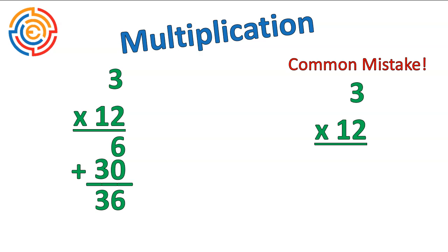But one very common mistake with this is that you do 2 times 3 is 6, and then 1 times 3 is 3, add them up, and you get 9. This is one of the most common mistakes students make when they're first multiplying.